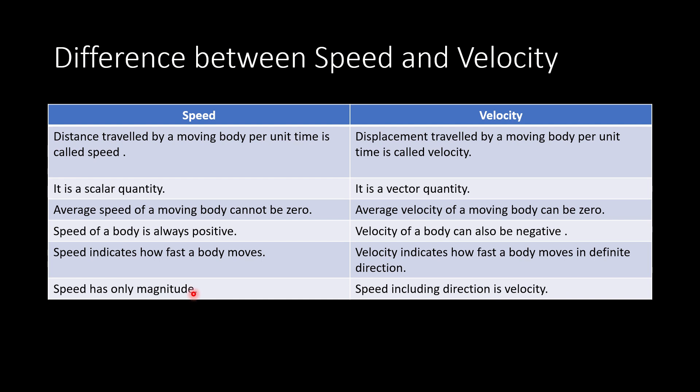Let us suppose a body moves with a speed of 5 km per hour, so in one hour it covers a distance of 5 km — this is only magnitude. But if we talk about velocity, velocity is speed including direction. So if a body moves 5 km per hour in the direction of east, or the i-cap direction, that term is referred to as velocity.